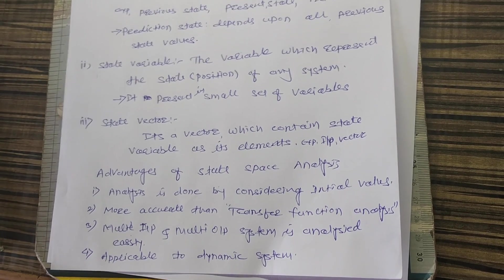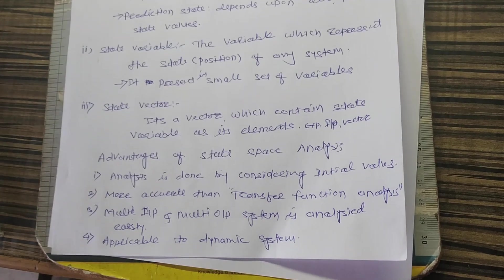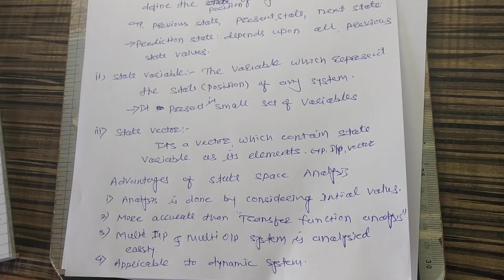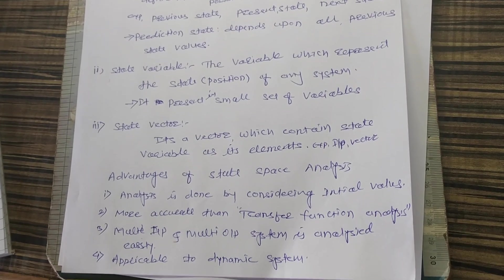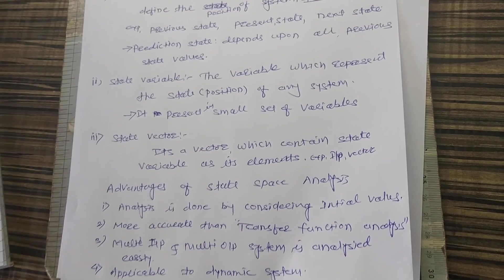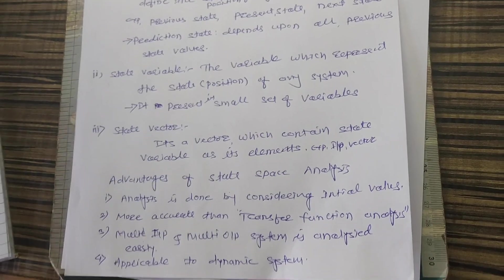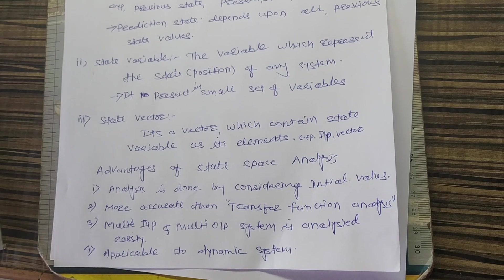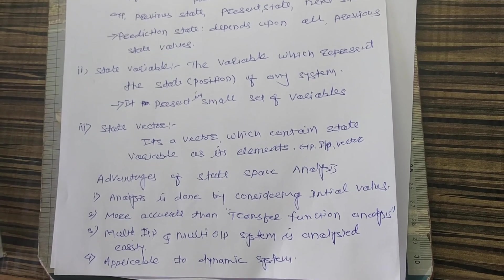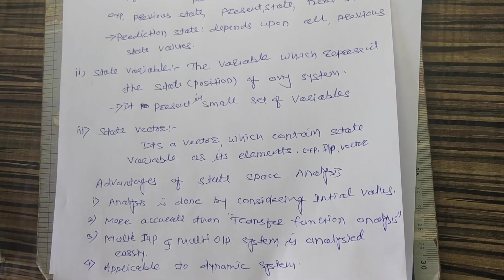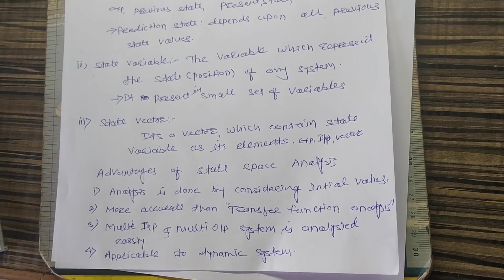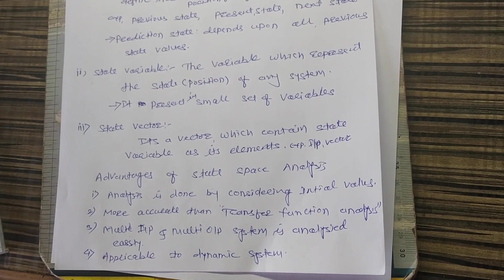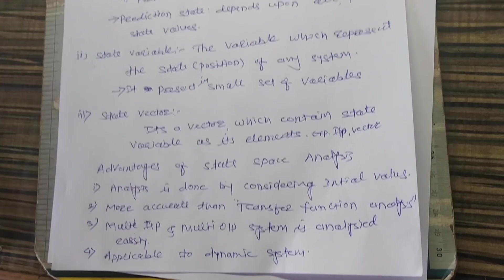Different conventional techniques such as transfer functions and pole-zero diagrams are used to define the stability of a system. But state space analysis has some advantages over these conventional techniques. The first advantage is that state space analysis uses only the initial values to define the stability of the system. When we use state space analysis, we do not need the past data of the system. Just by taking the initial values, we can define the stability.